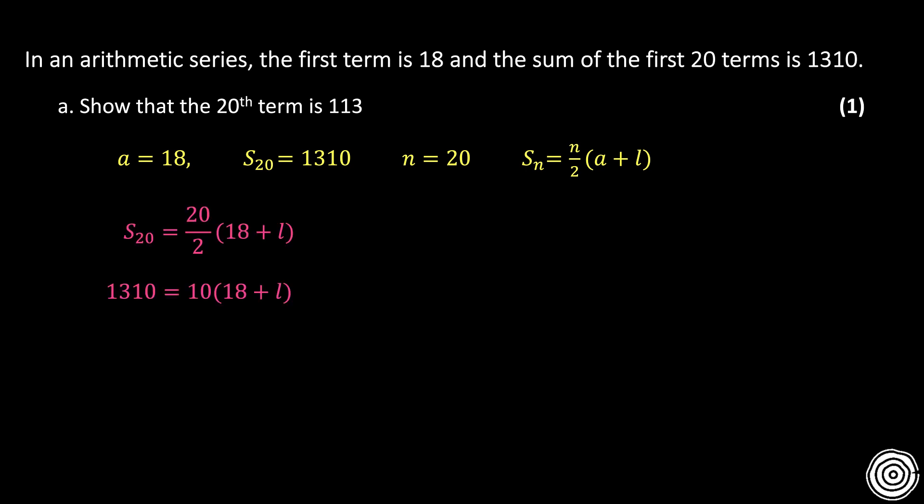So putting all the information that I know, I've got 1,310 is equal to 20 over 2, open bracket, 18 plus L, which simplifies to that here.